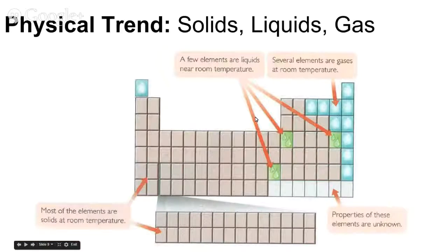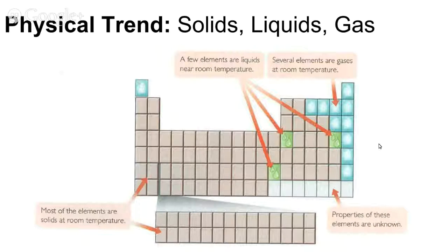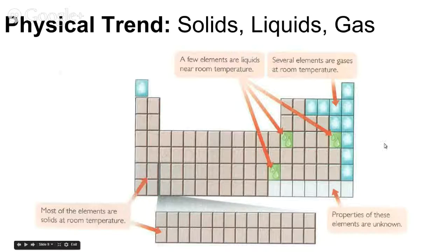The next physical trend is solids, liquids, and gases. If you look at the table, most things are solid — most things are metals, so most things are solid. Very few things are liquid or gas at room temperature. This table would obviously change depending on the temperature, but what we're looking at is just room temperature. So most of these things are solid, and the things in the upper right-hand corner are gases.